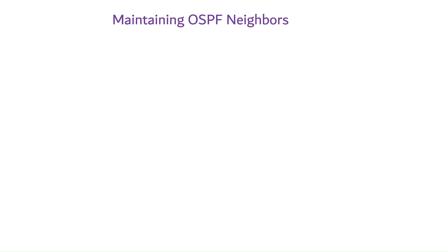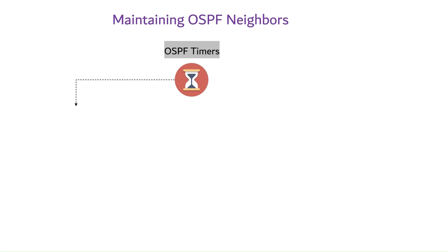Maintaining OSPF neighbor relationships is crucial for the stability and smooth operation of OSPF networks. OSPF uses several timers to control various aspects of its operation. These timers play a crucial role in maintaining network stability and convergence. Two of the most important OSPF timers are the hello timer and the dead interval timer.